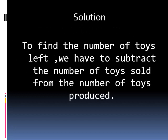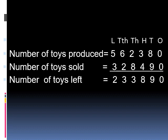To find the number of toys left, we have to subtract the number of toys sold from the number of toys produced. Number of toys produced is 5,62,380. Number of toys sold is 3,28,490. Number of toys left is 2,33,890.